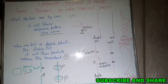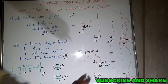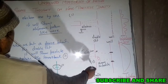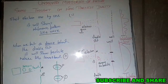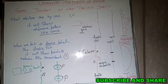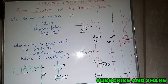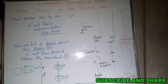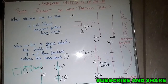It means we cannot get particle nature and wave nature at the same time. This is my interpretation: wave nature and particle nature cannot be observed simultaneously.